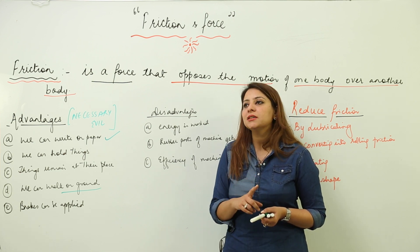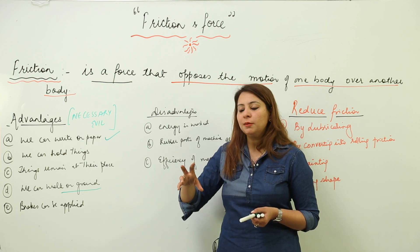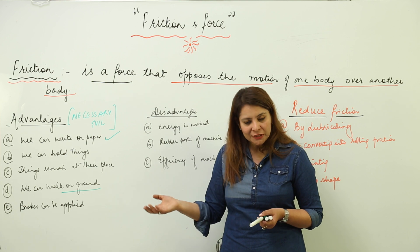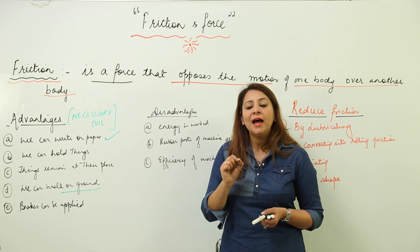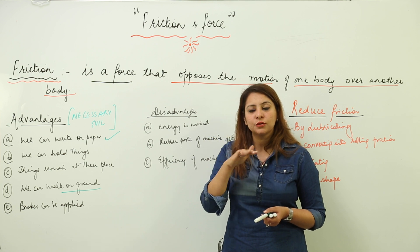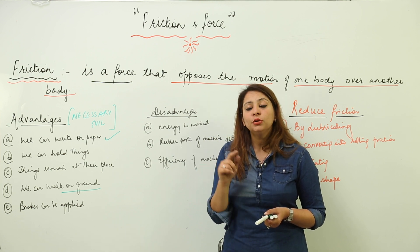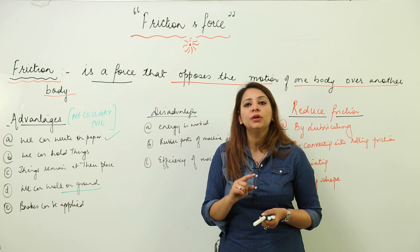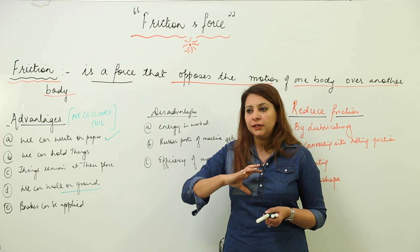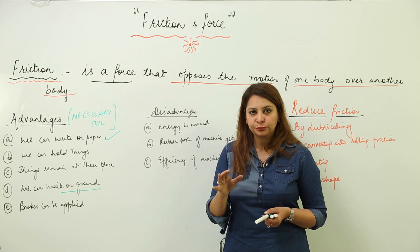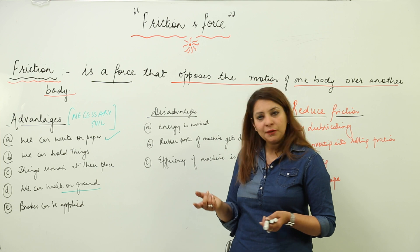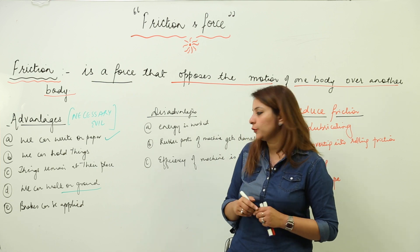Runners who participate in races have spikes on the soles of their shoes. Those spikes are there to increase friction so that they can run better and not slip. It reduces the chance of slipping. So we can walk and run on the ground due to friction.